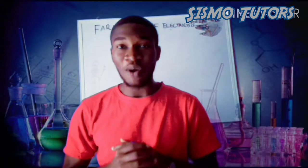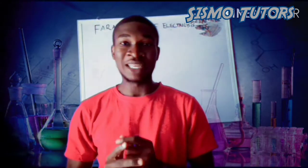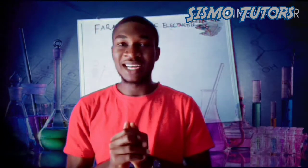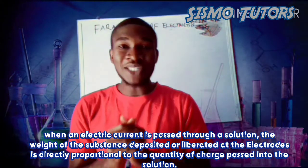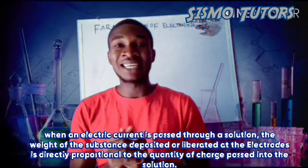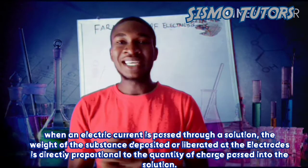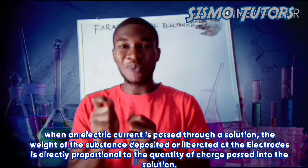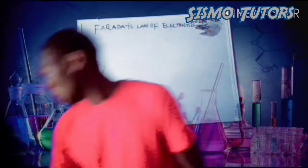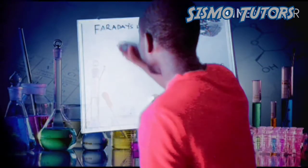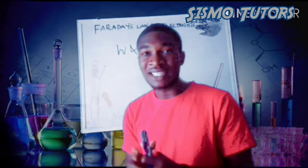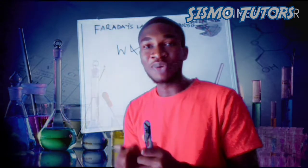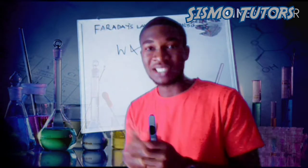Today we are treating Faraday's law of electrolysis. We have two laws that were related by Faraday. The first law states that when an electric current is passed through a solution, the weight of the substance deposited or liberated at the electrodes is directly proportional to the quantity of charge passed into that solution. So we can say that W is directly proportional to Q, where W is the weight of the substance deposited and Q is the amount of charge passed into the solution.